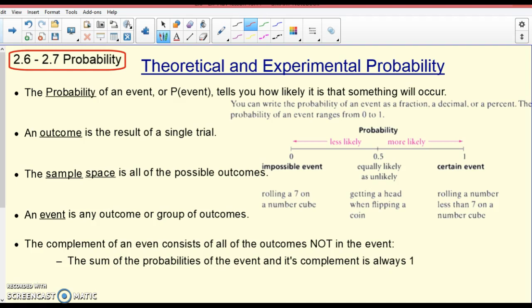Okay, probability. You guys have this in your yellow note packet. The probability of an event, or probability of the event, that's how you write it, tells you how likely it is that something will occur. Now, here's probability. They are somewhere between 0 and 1. Probabilities are only between 0 and 1.